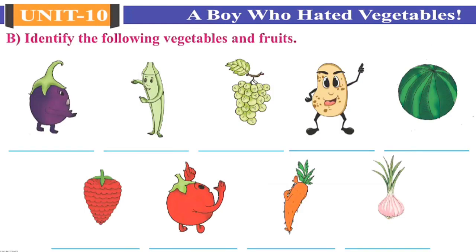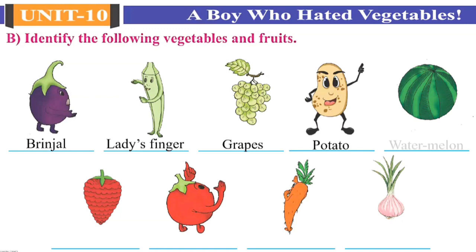Let's move to Activity 1, Question B: Identify the following vegetables and fruits. Pictures of the vegetables and fruits are given. You have to recognize them and the names are written down below. The first vegetable is Brinjal. Second is Lady's Finger. Third is Grapes. Fourth is Potato. Fifth is Watermelon. Sixth is Strawberry. Seventh is Tomato. Eighth is Carrot. Ninth is Onion. So we have identified all the vegetables and fruits.